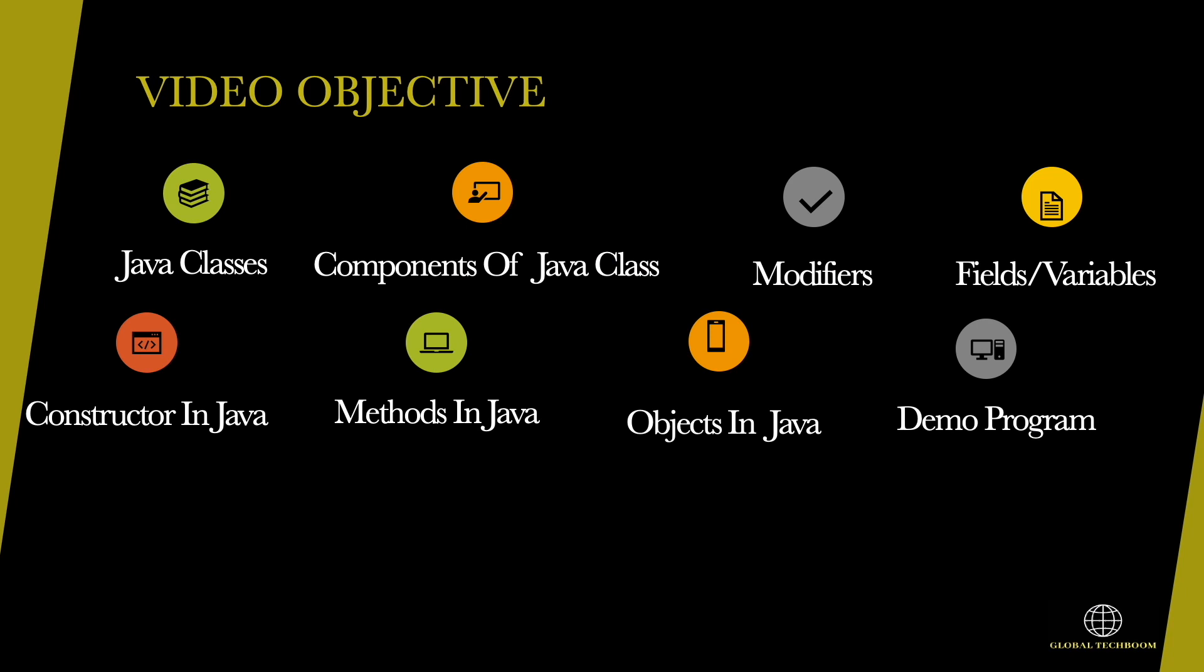Let's see video objective. For an object oriented language like Java, an application program is developed using classes and objects. The structure of a Java program is made up of classes. Let's move on to detail of the Java classes.